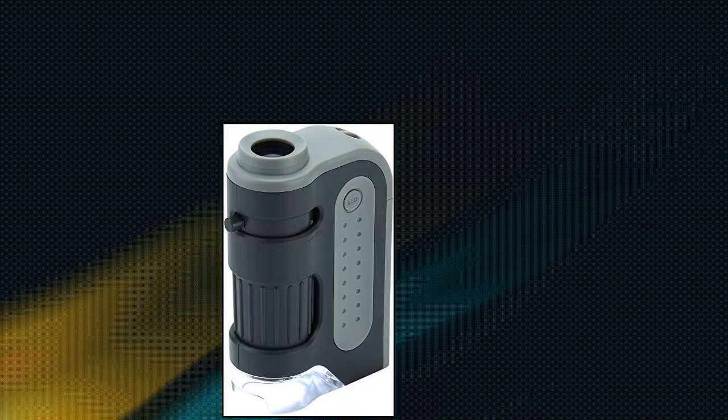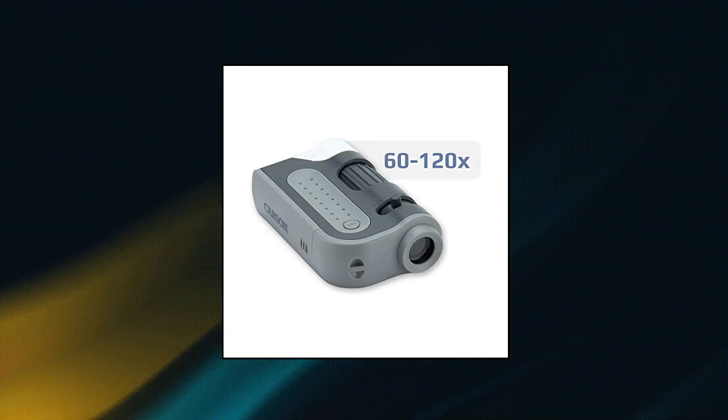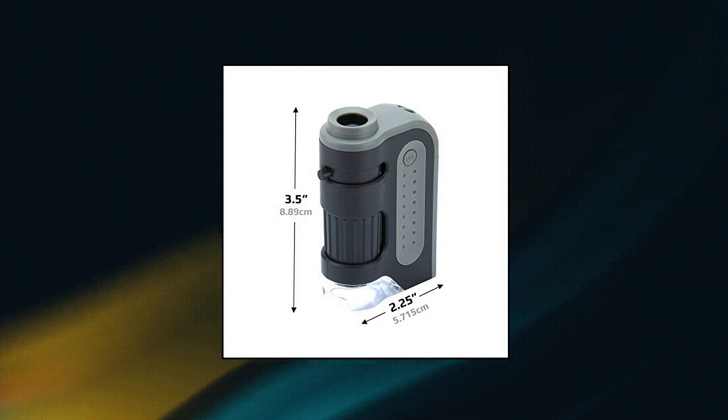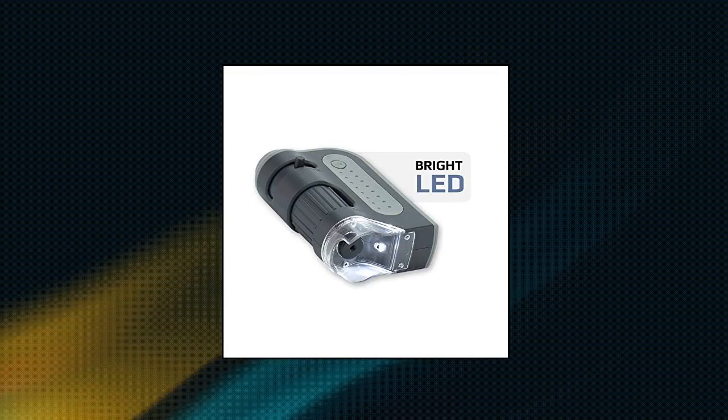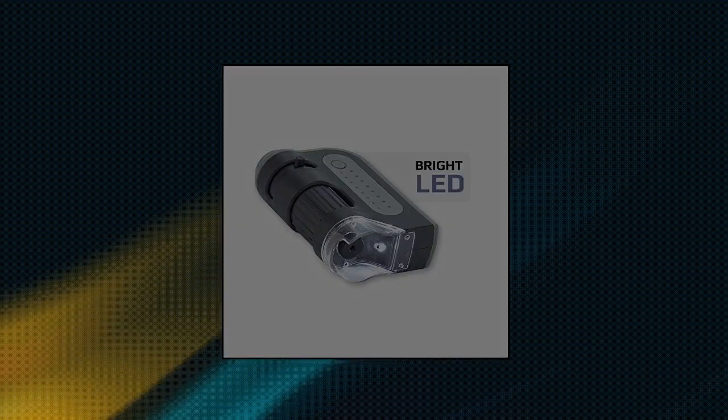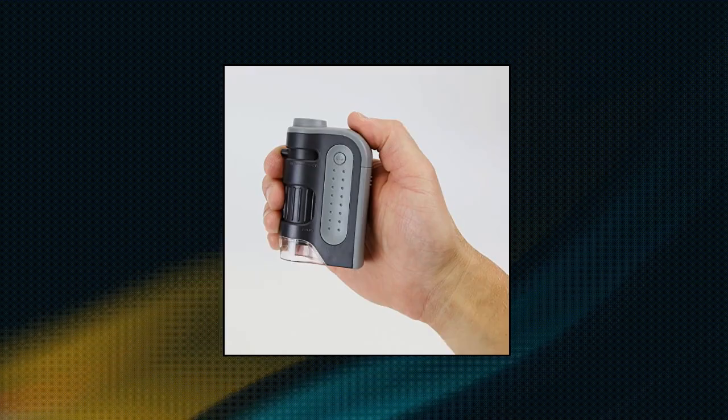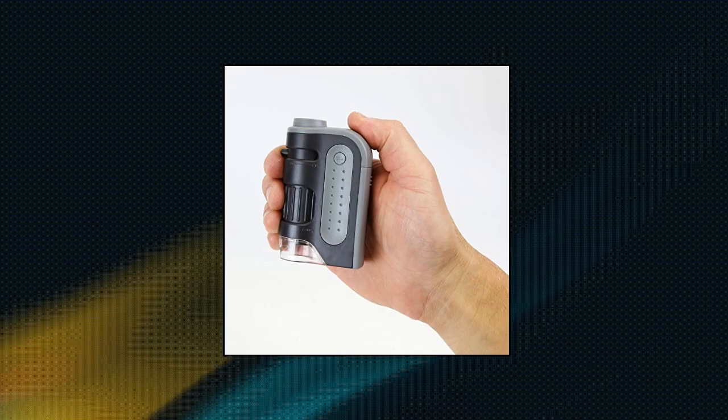Carson Micro Bright Plus 60x-120x LED Lighted Pocket Microscope MM-300. Pocket microscope with a powerful 60x-120x magnification range. Precision molded aspheric lenses provide superior optics. Designed to be compact, lightweight, and portable. Bright LED light is powered by one AA battery, not included.